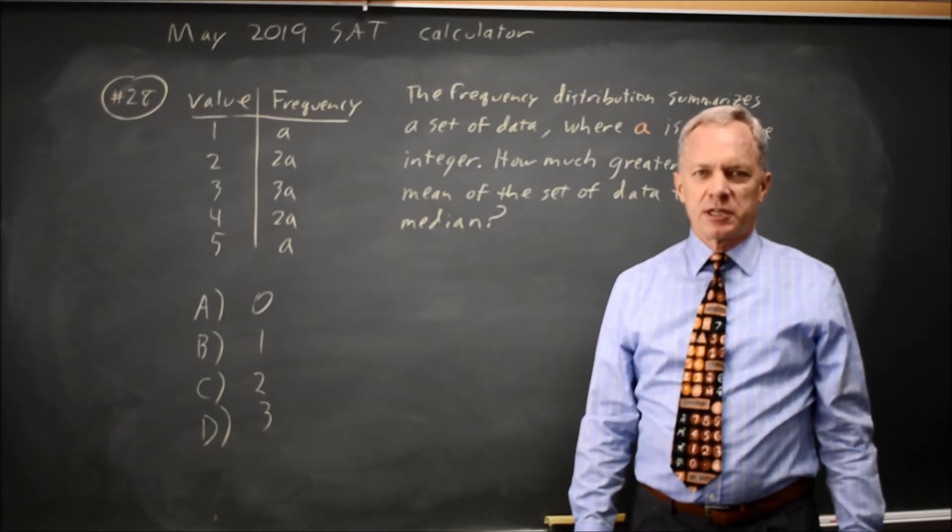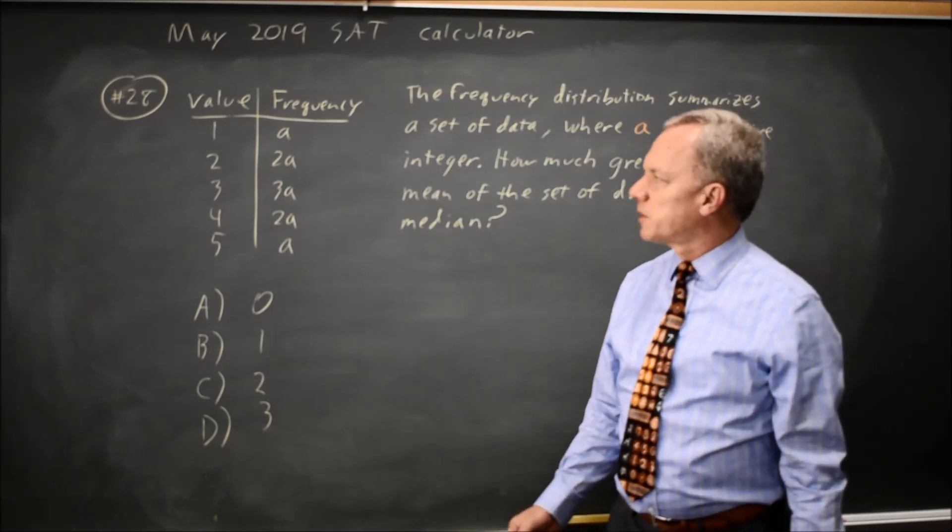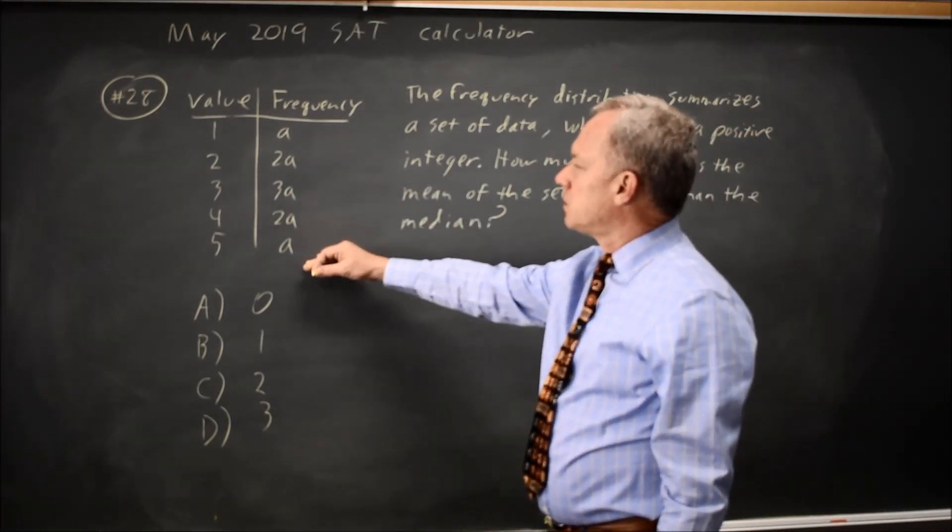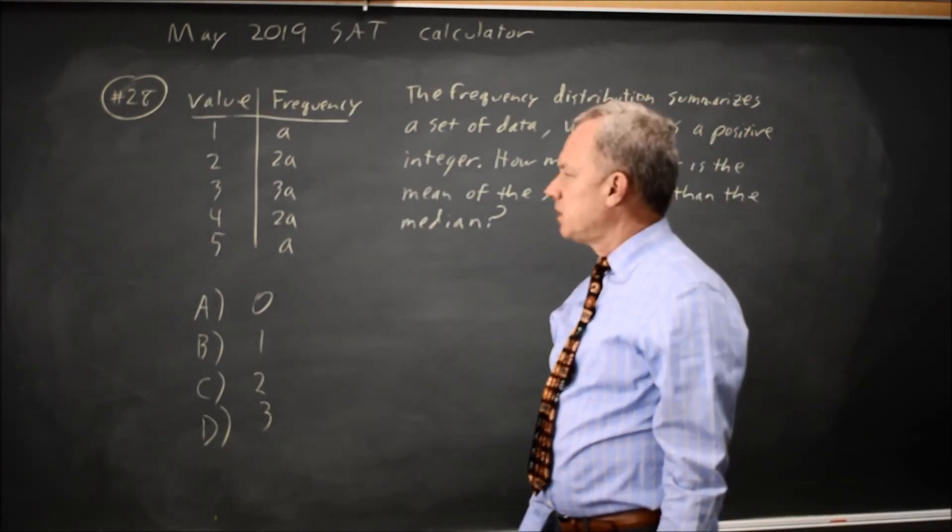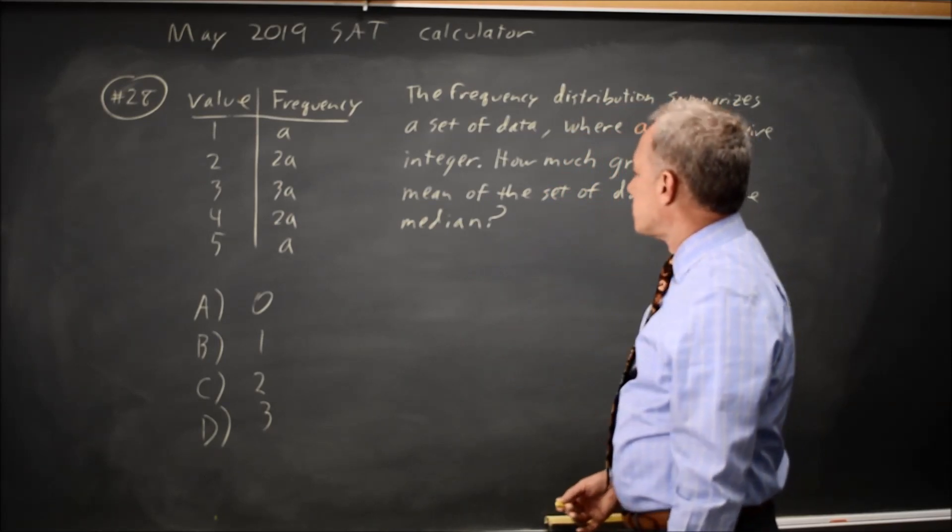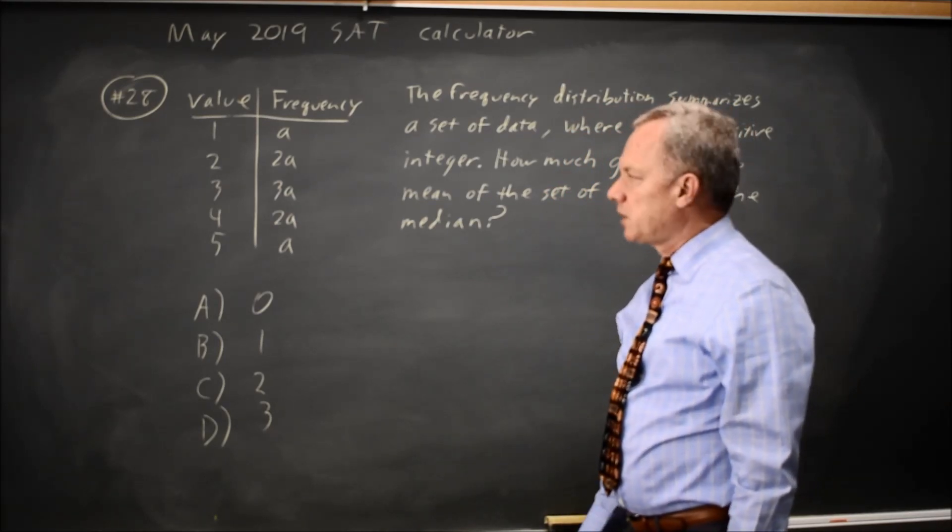This is calculator question number 28 from the May 2019 international exam. College Board is asking us about the distribution shown here where A is a positive integer, and they ask about the difference between the mean and the median.